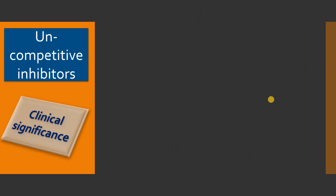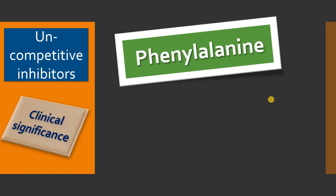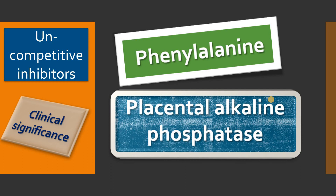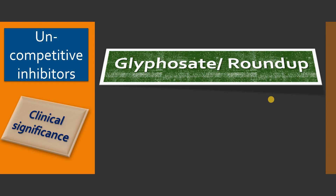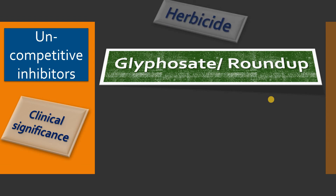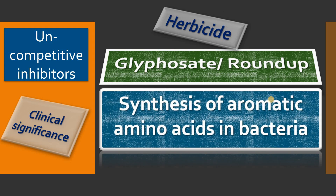What is the clinical significance of uncompetitive enzyme inhibitors? Phenylalanine is an uncompetitive enzyme inhibitor for placental alkaline phosphatase, also called the Regan enzyme. It is expressed in the placenta and is an isoenzyme of alkaline phosphatase. Using this property, we can separate isoenzymes of alkaline phosphatase by inhibiting the placental isoform with phenylalanine. Similarly, Glyphosate, also known as Roundup, is a herbicide that uncompetitively inhibits biosynthesis of aromatic amino acids in bacteria.